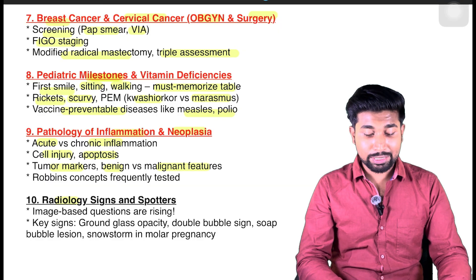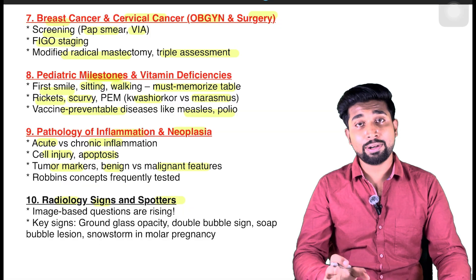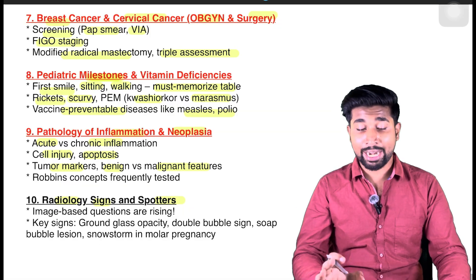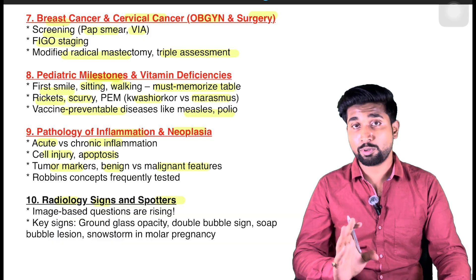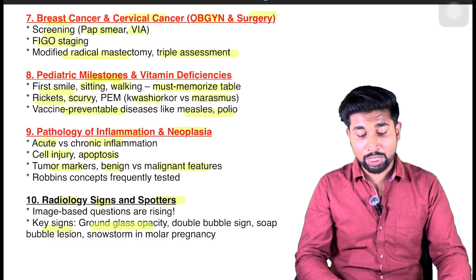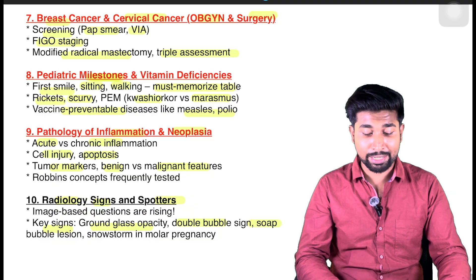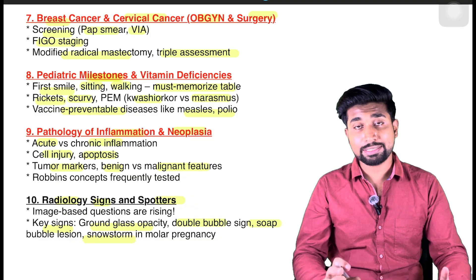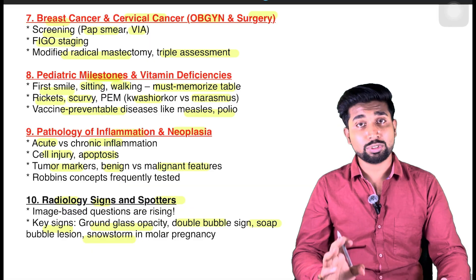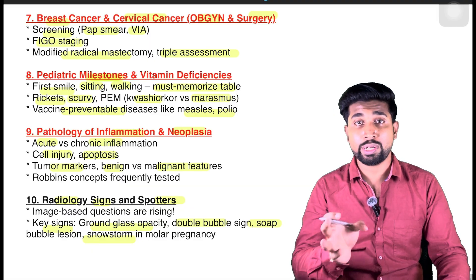From radiology, signs and spotters — image-based questions are very frequent nowadays. Radiology will interrelate with orthopedics and anatomy, and 9 to 12 questions may come. Key signs like ground-glass opacity, double bubble sign, and soap bubble sign are very important. Also snowstorm appearance in molar pregnancy and PCOS — these image-based questions may come from radiology interrelating with OBGYN or surgery.